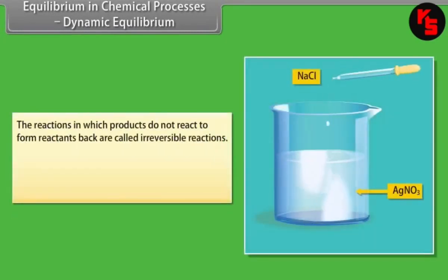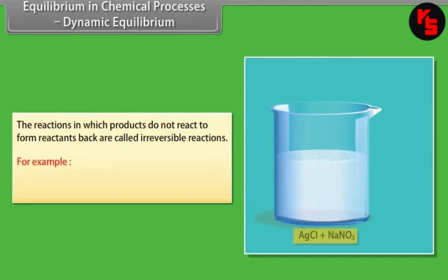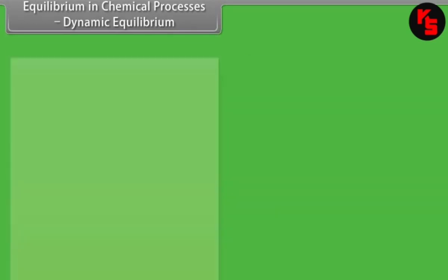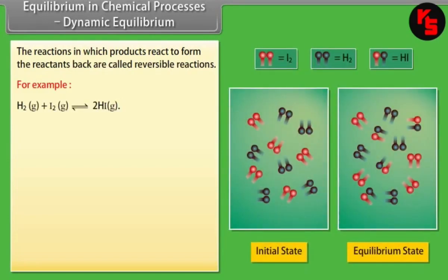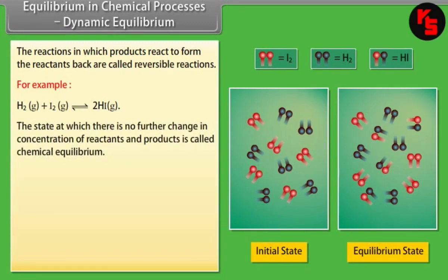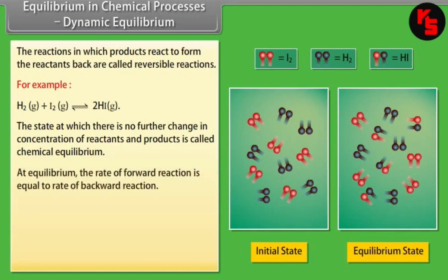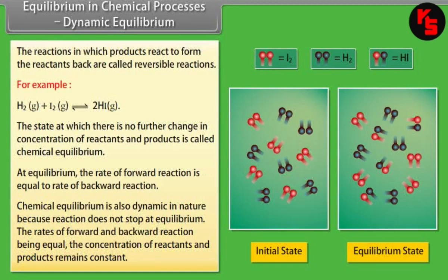Equilibrium in Chemical Processes — Dynamic Equilibrium. Reactions in which products do not react to form reactants back are called irreversible reactions. For example, silver nitrate reacts with sodium chloride to give silver chloride and sodium nitrate. Reactions in which products react to form reactants back are called reversible reactions, represented by two arrows pointing in opposite directions. The state at which there is no further change in concentrations of reactants and products is called chemical equilibrium. At equilibrium, the rate of forward reaction equals the rate of backward reaction, so concentrations remain constant.